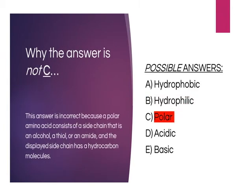Option C: Polar. An amino acid is a molecular building block of proteins with a central carbon atom called the alpha carbon, bonded to two functional groups — an ammonium group and a carboxylate group. The alpha carbon is also bonded to a hydrogen atom and an R group or side chain. This answer is incorrect because a polar amino acid consists of a side chain that is an alcohol, a thiol, or an amide, and the displayed side chain has hydrocarbon molecules.